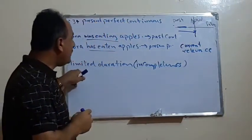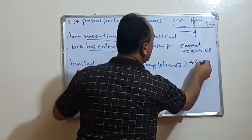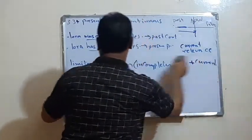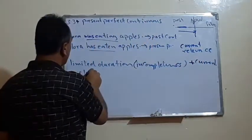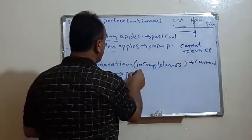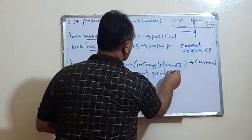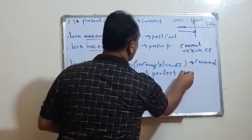So, then, limited duration and or plus the current relevance. This produces what? Produces the Present Perfect Continuous.